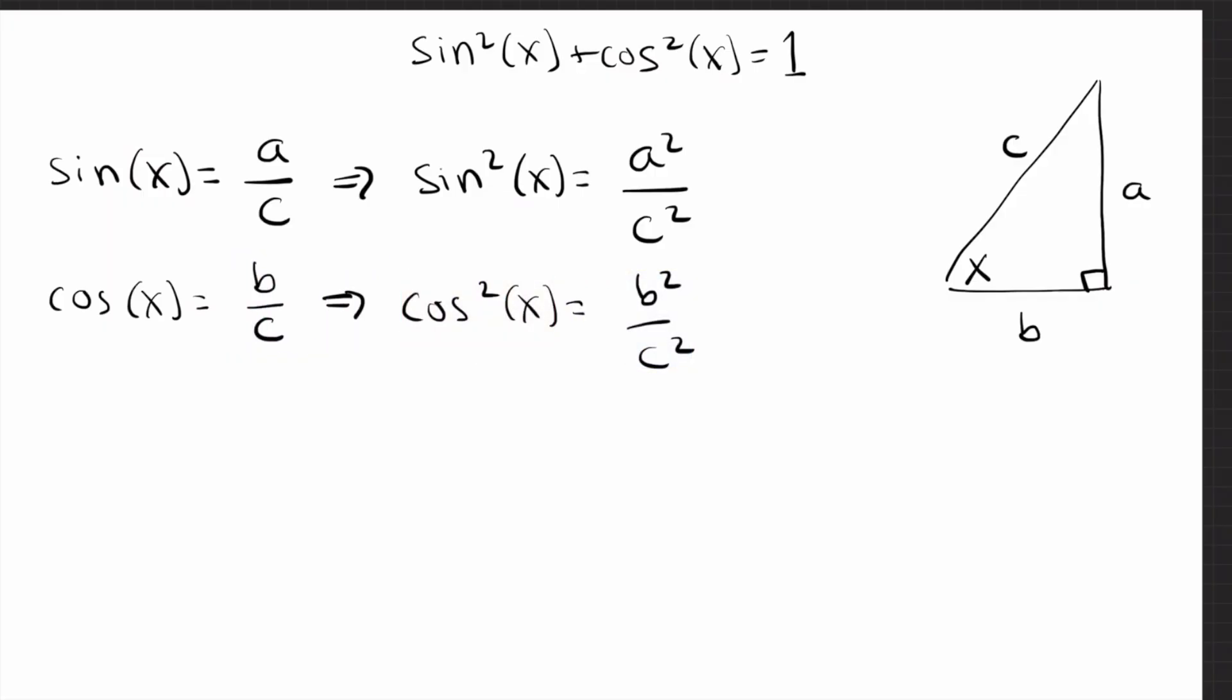Now we're getting somewhere. I care what sine squared plus cosine squared equals. So let's go ahead and plug those both in. Sine squared is a squared over c squared, and cosine squared is b squared over c squared. I've already got common denominators, so I can just add up the tops.